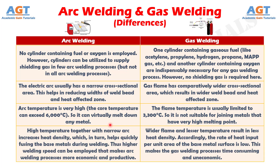Difference number 9. High temperature together with a narrow arc increases heat density, which in turn helps quickly fuse the base metals during arc welding. Thus, higher welding speed can be employed, making arc welding more economic and productive. In contrast, the wider flame and lesser temperature in gas welding result in less heat density, making the rate of heat input per unit area low and the process time-consuming and uneconomic.